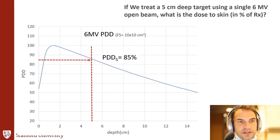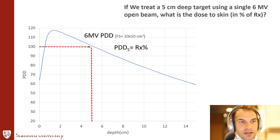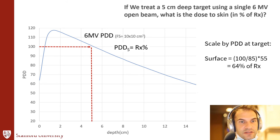If we treat a 5 cm deep target with a 6 MV open beam, what is the dose to the skin as a percent of the prescription? Looking at the PDD curve, the PDD at 5 cm depth is 85%. If we want to treat that target to 100% of our prescription, we have to scale everything up. The shape of the PDD curve stays the same, so the skin dose becomes 64% — that is the ratio of 100 over 85 times 55%, which is the original PDD at the surface.